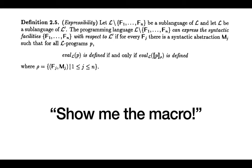This brings us to the big definition: expressibility. The motto is 'show me the macro.' If you want to say that some language L-prime can express a feature F, all you have to do is give a macro that expands F out into the language without F. L is our big language with feature F, and L-prime is L without F.